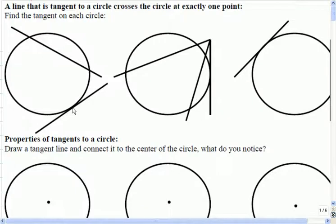For example, this part here is a tangent. This one is a tangent because there's exactly one point there that it just kisses the edge of the circle.